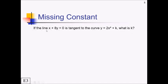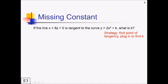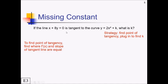For this problem, if the line x plus 8y equals 0 is tangent to the curve y equals 2x⁴ plus k, we want to know the value of k. Our general strategy is to figure out an x and y value on this curve. The only thing we know about this curve is that it has this tangent line, which tells us the line intersects the curve at the point where the derivatives are the same. So we'll find that point of tangency and plug it in to figure out k.